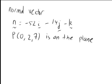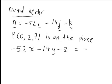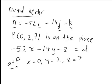We now know the normal vector to the plane is negative 52i minus 14j minus k, and point P(0, 2, 7) lies on the plane. The equation of the plane takes the form negative 52x minus 14y minus z equals D. Substituting P: negative 52(0) minus 14(2) minus 7 gives negative 35. So D equals negative 35.